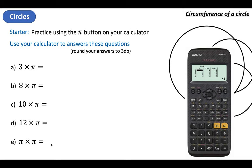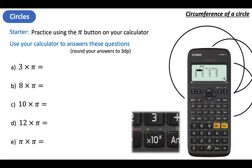Now if you've got one of these — these are the sort we sell at school — it's the new Casio one which is really, really good. The Pi button is at the bottom. The slightly older version they used to sell is really similar as well. I've enlarged it a little bit so you can see there's a little hidden Pi button just above the x10 to the x.